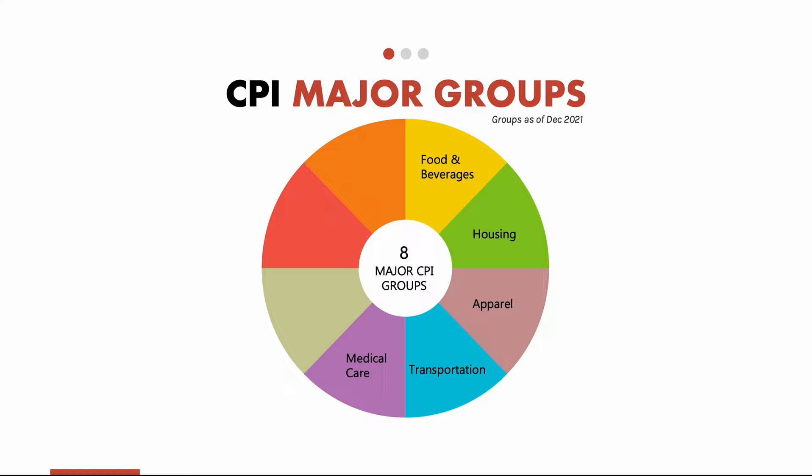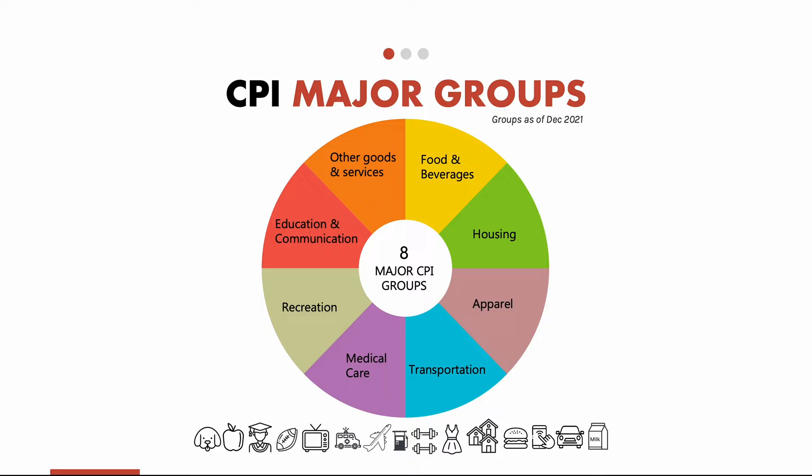Sixth is recreation, like TV, sports equipment, and even your pets. Seventh is education and communication, like college tuition, phone services, and computer software. And finally, eighth is other goods and services, like tobacco, funeral services, haircuts, and more.